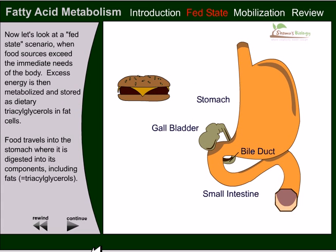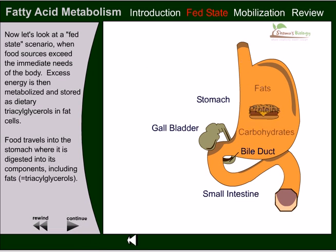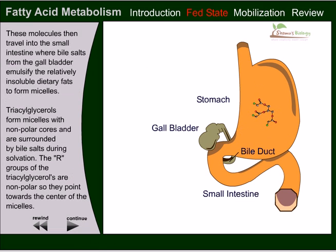Now let's look at the fed state scenario. When food sources exceed the immediate needs of the body, excess energy is metabolized and stored as triacylglycerol in fat cells, which are called adipose tissue cells, destined to store fatty acids. Food travels into the stomach where it is digested into components including fats — and here fat equals triacylglycerol. These molecules then travel into the small intestine when bile salts from the gallbladder emulsify the relatively insoluble dietary fats to form micelles.